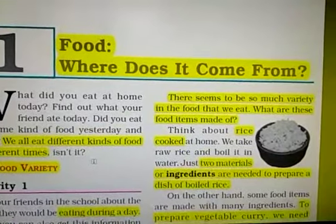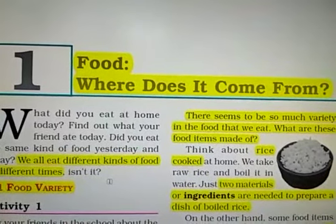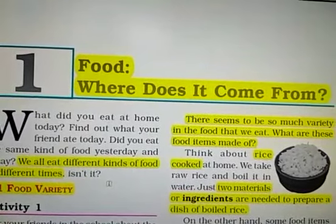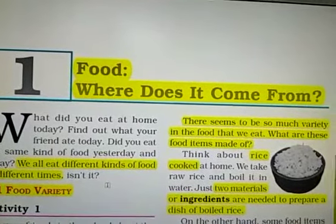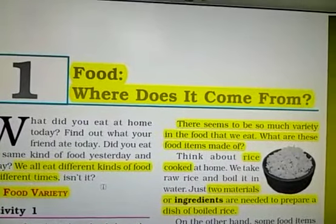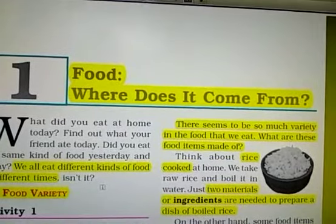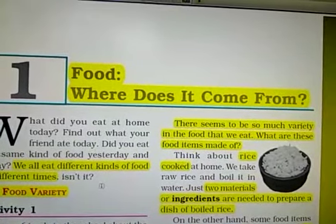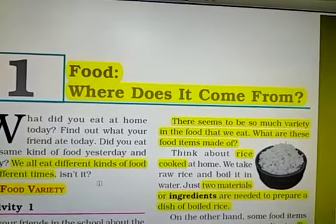Where does it come from? You know very well, and you studied in the previous class that food is very important. The important components of food are proteins, carbohydrates, fats, minerals, vitamins, water, and roughage. These different parts of food are also known as the nutrition of foods, and they have different roles in our body.